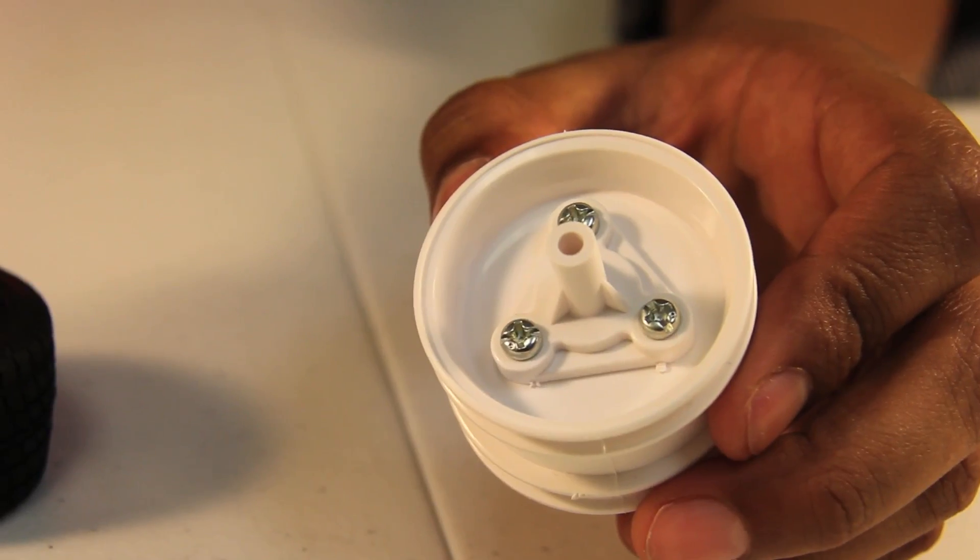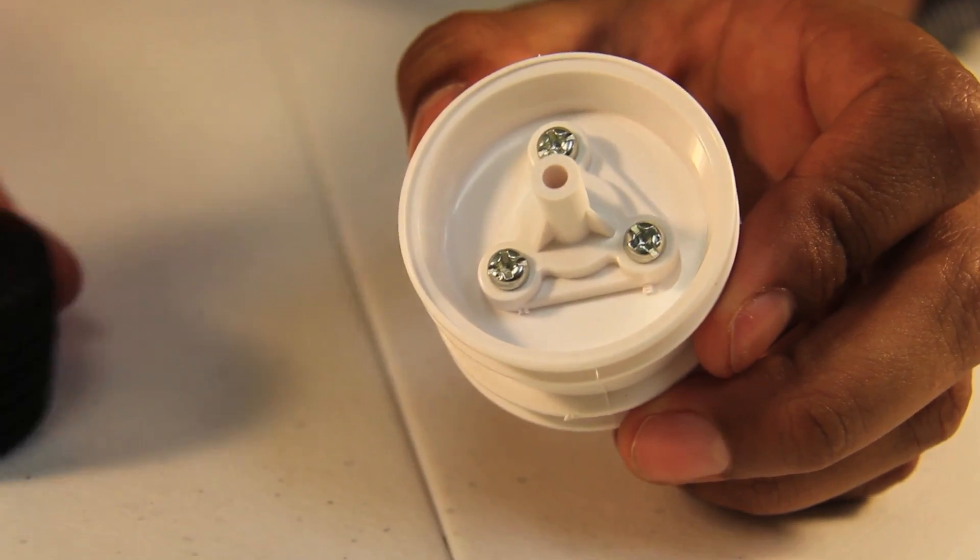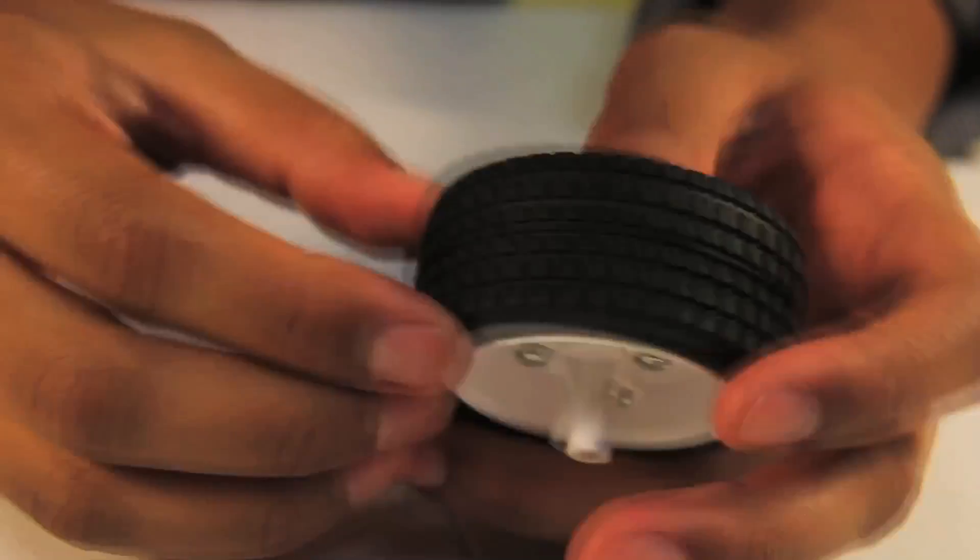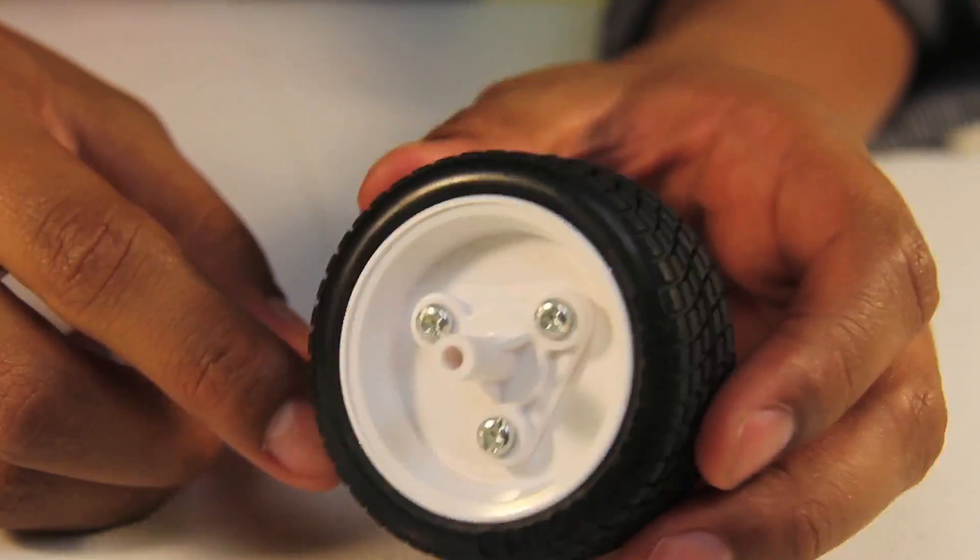Now that I have attached the wheel hub to the rim, I'm ready to put my tire on. Just wiggle it around. You may need to apply some force. And now we have our completed tire.